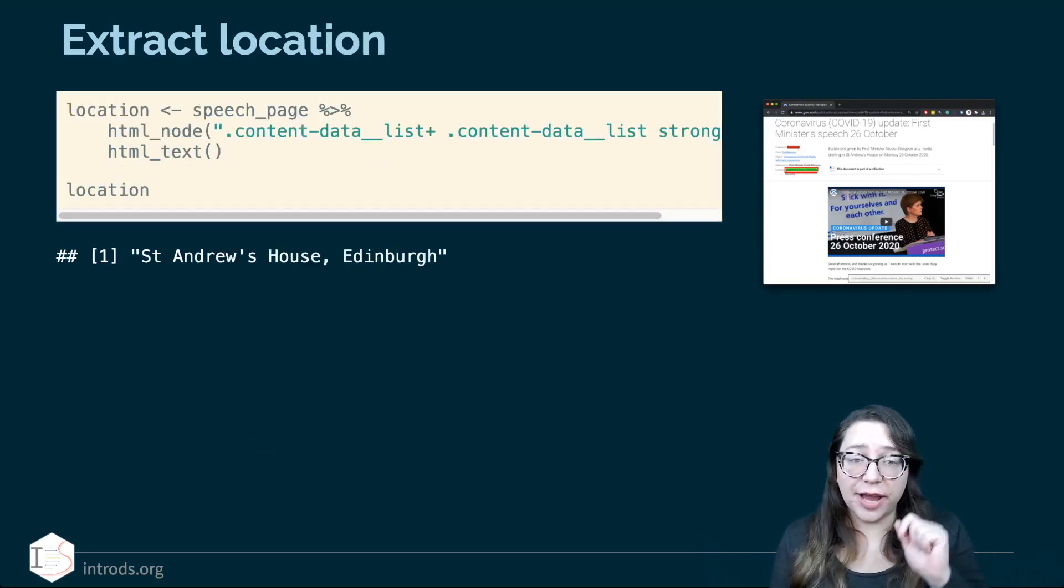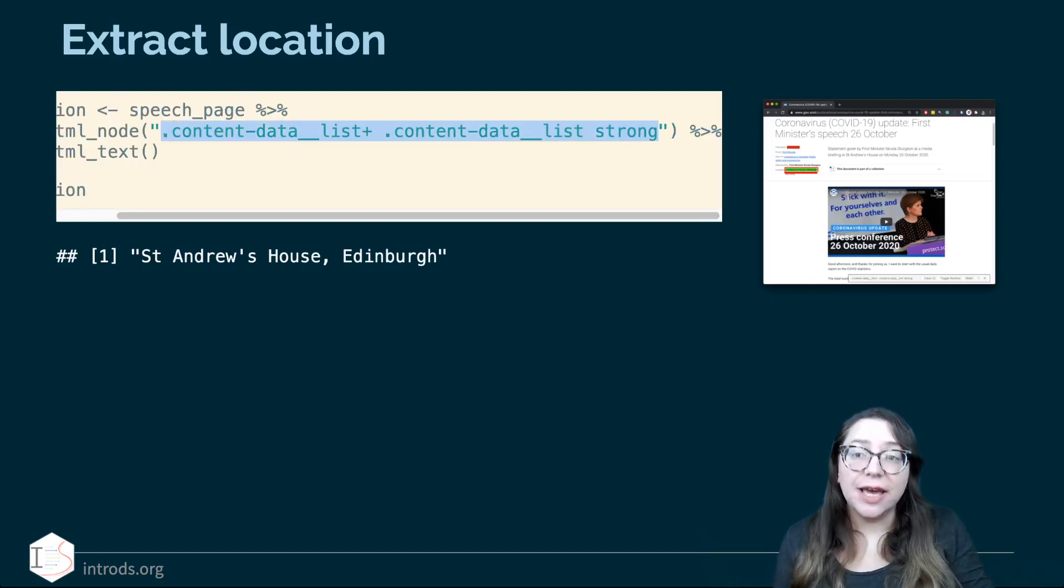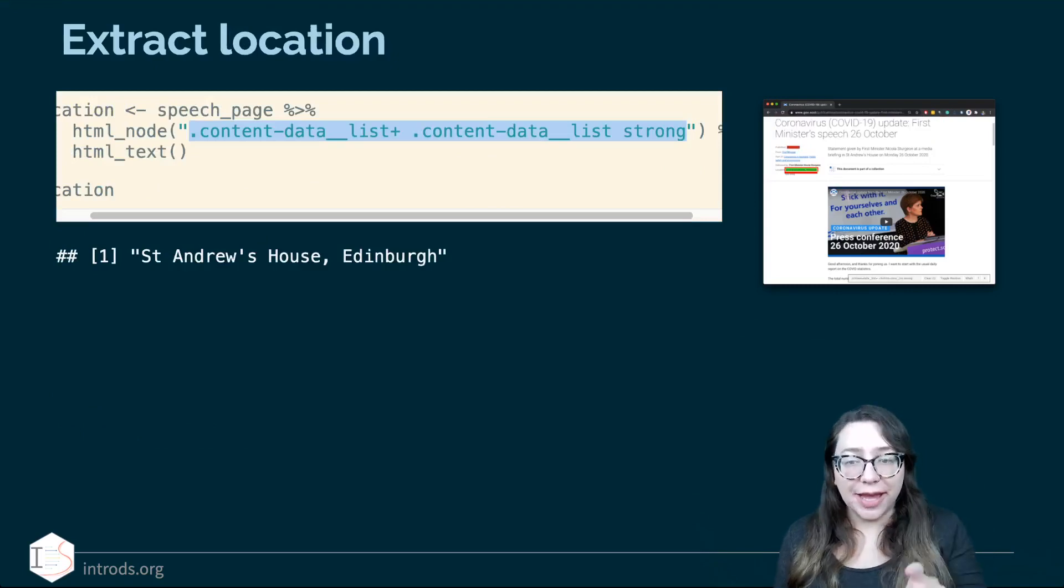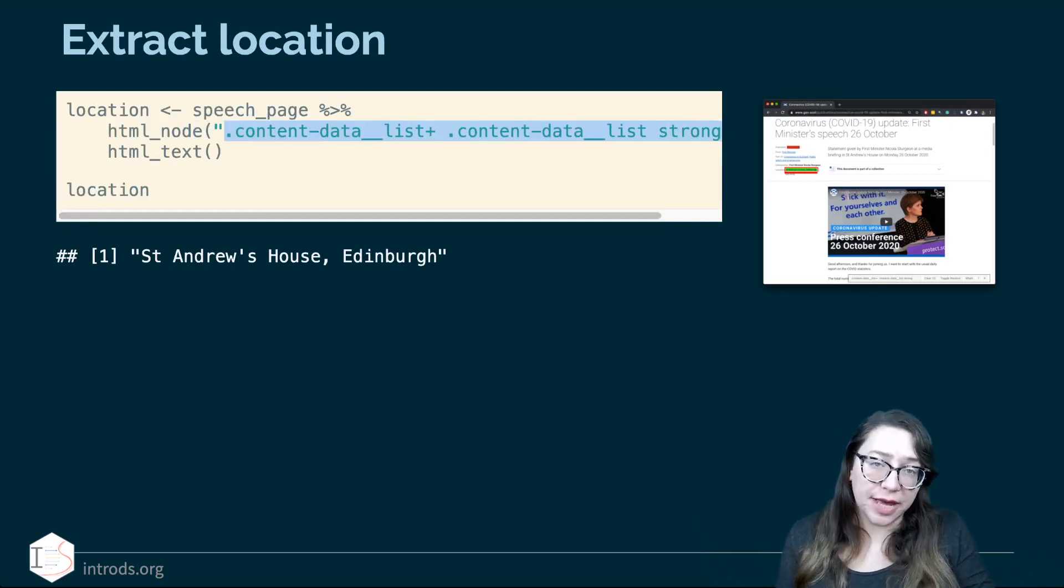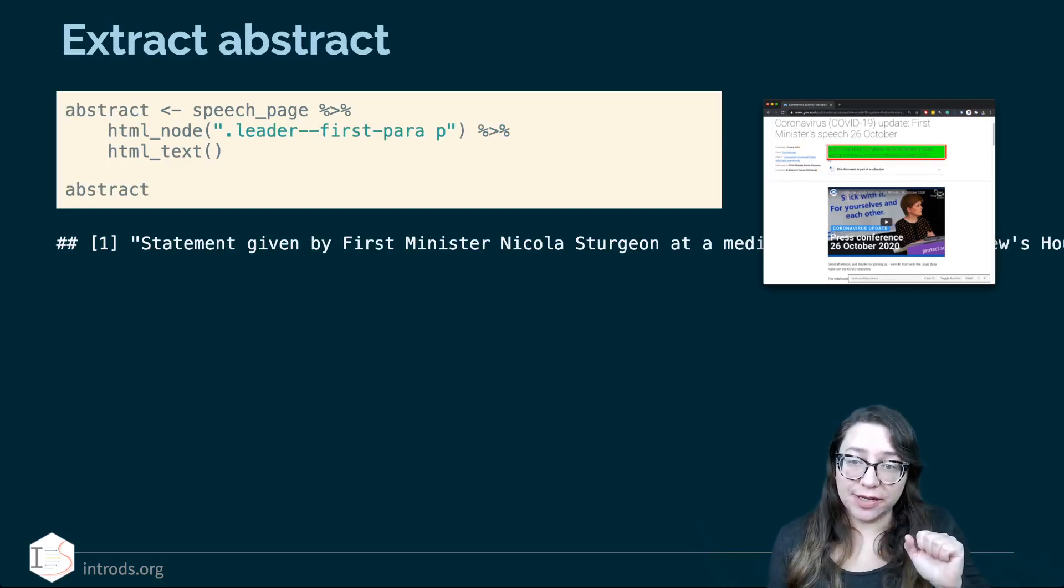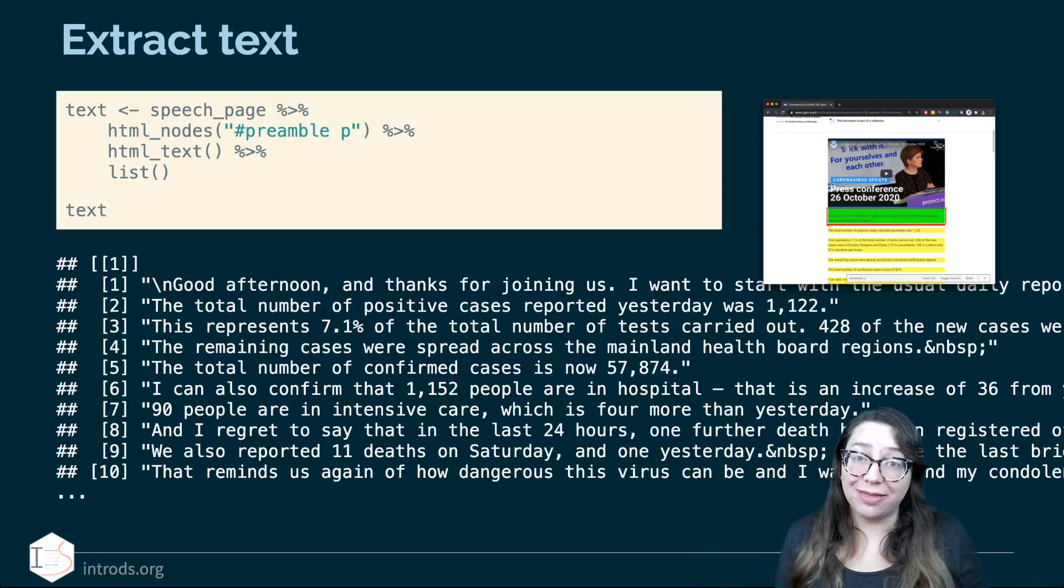The location is located slightly beneath the date so again clicking around we can find the selector associated with that. And again I use the same pattern start with the page the speech_page get the node out get the text out and this particular speech was in Saint Andrew's house in Edinburgh which is where many of these speeches are. We then get the abstract which is the little text description right underneath the title. So again clicking around here is the selector for the abstract and using the same pattern one more time storing that as abstract and finally we get the text.